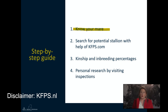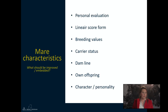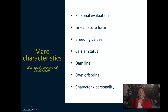There are multiple things that help you, both from the KFPS site and background knowledge, but your personal evaluation is also important. Key points for mare characteristics include what should be improved and what you want to embed. First is your personal evaluation — what are the good points and what could be improved? You can also use the linear score form, breeding values, and background info from the KFPS site, such as carrier status, dam line, existing offspring, and character or personality.